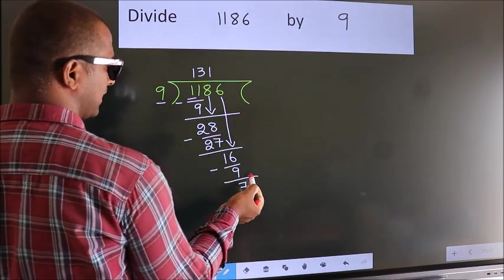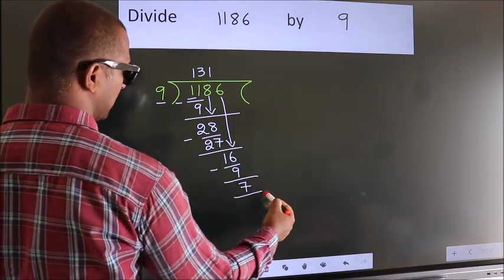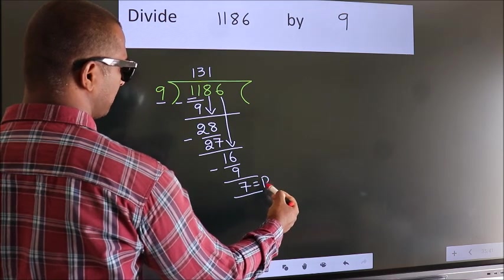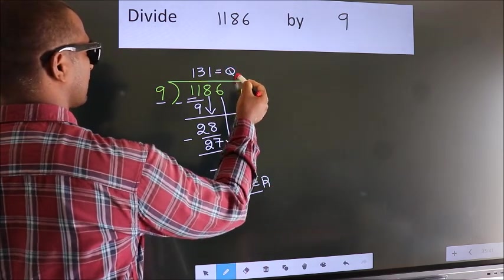No more numbers to bring it down. So we stop here. This is our remainder. This is our quotient. This is our problem.